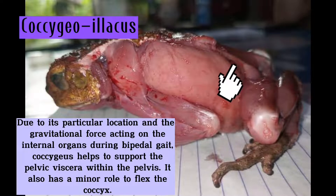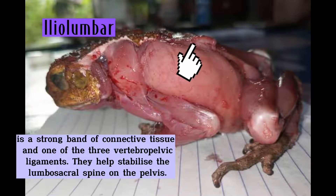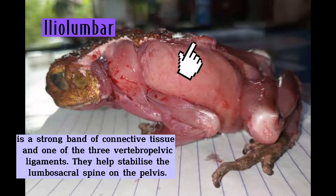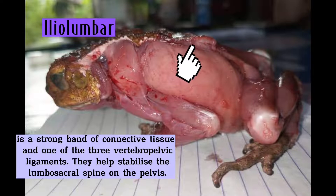The gluteus also has a minor role in flexing the hip. The iliolumbar ligament is a strong band of connective tissue and one of the three vertebropelvic ligaments. They help stabilize the lumbosacral spine on the pelvis.